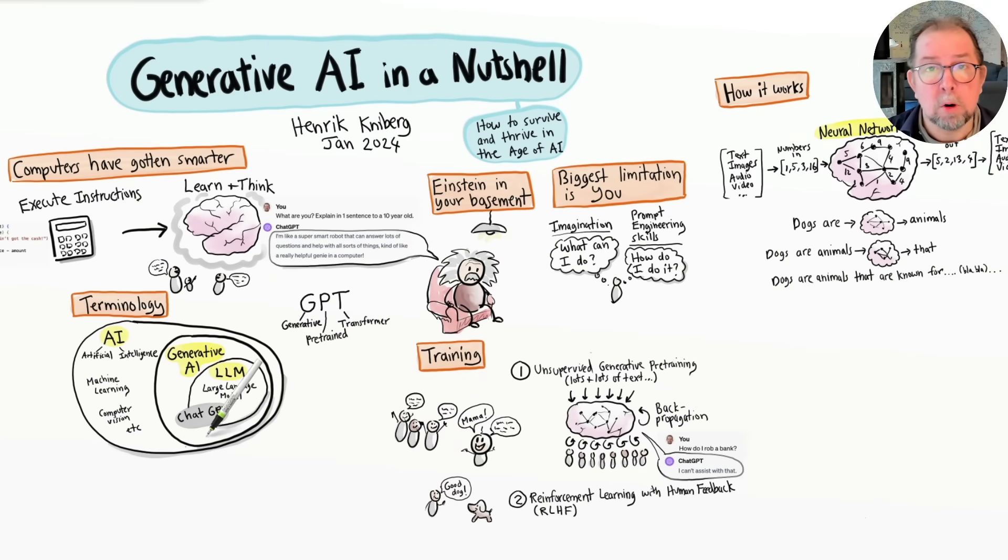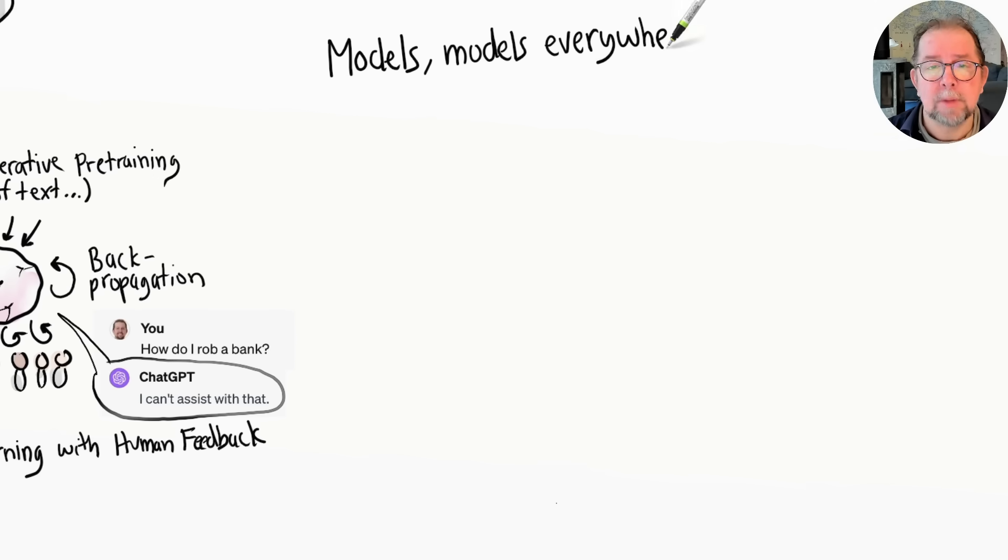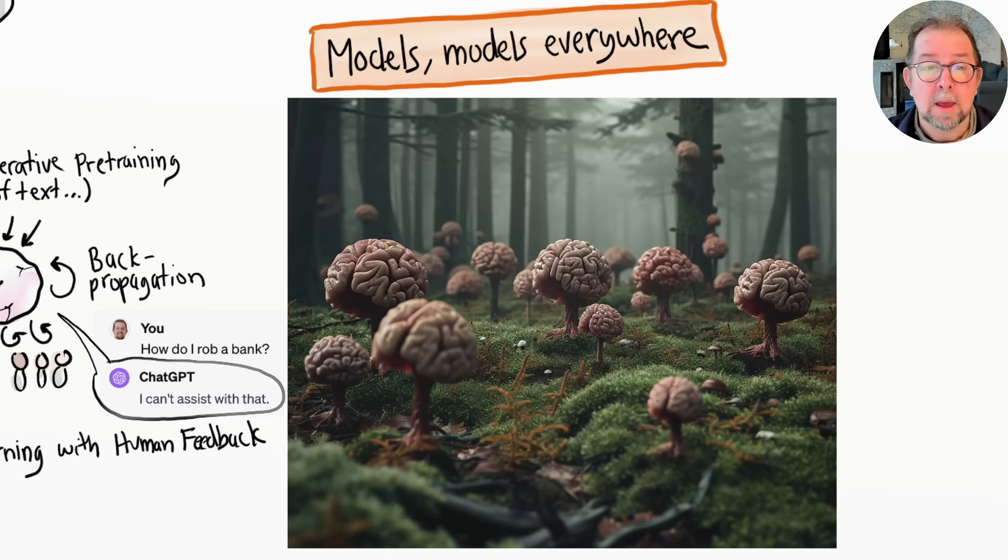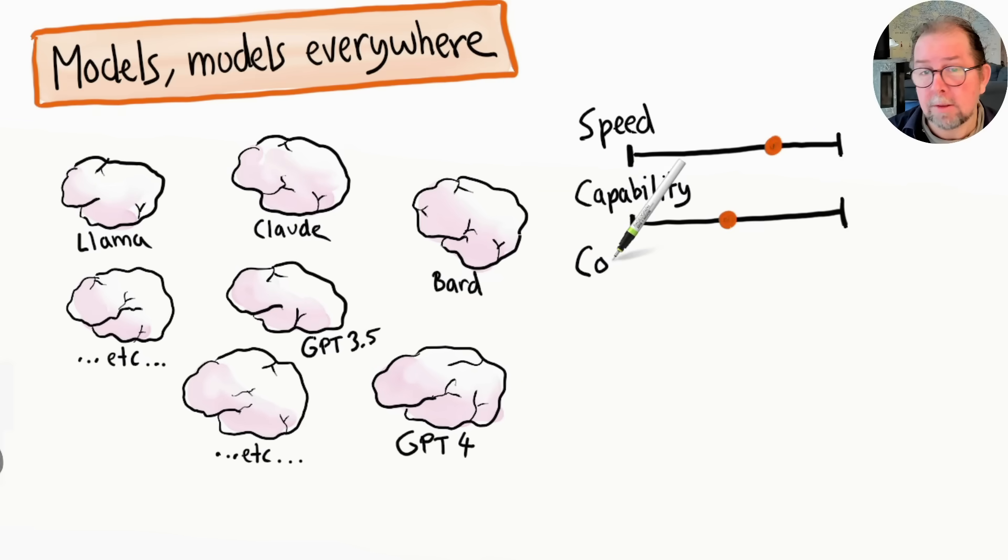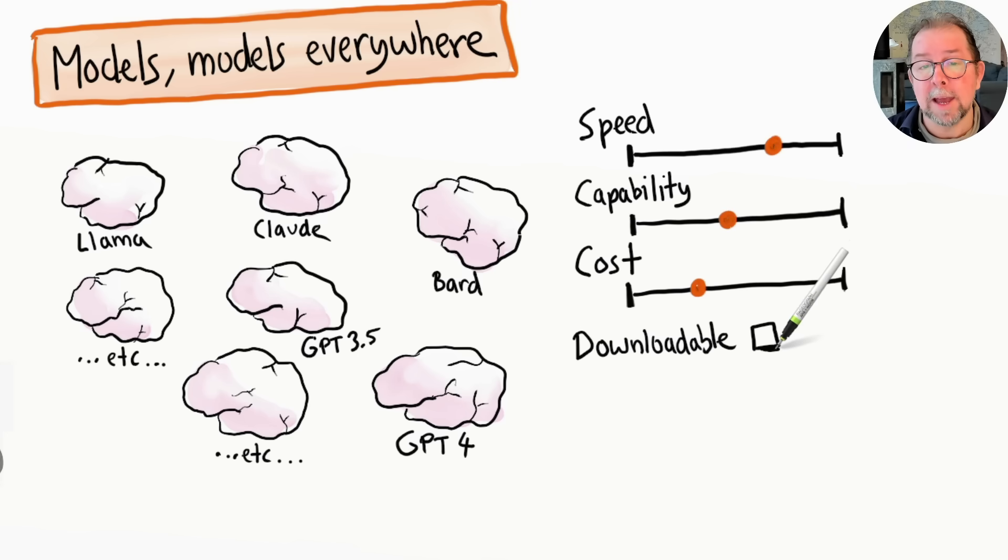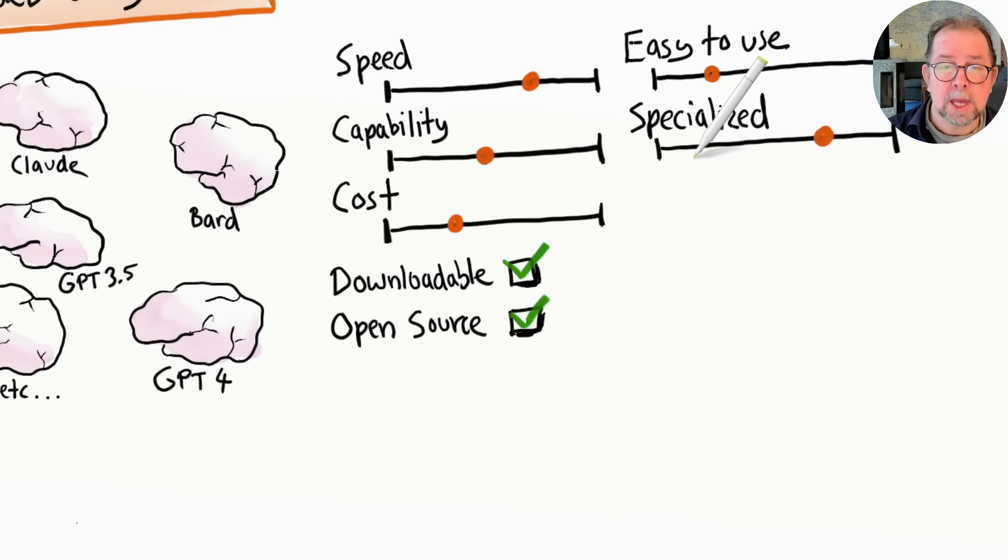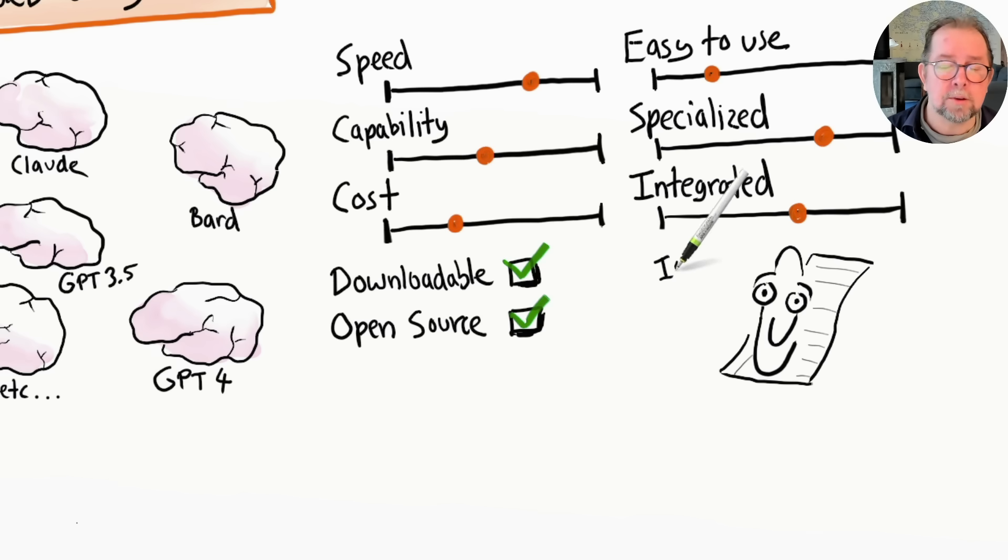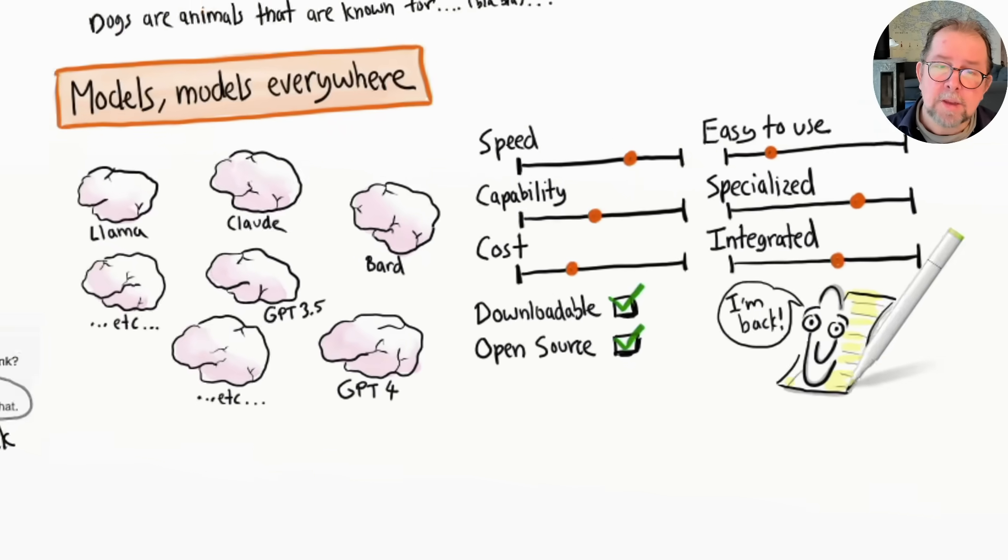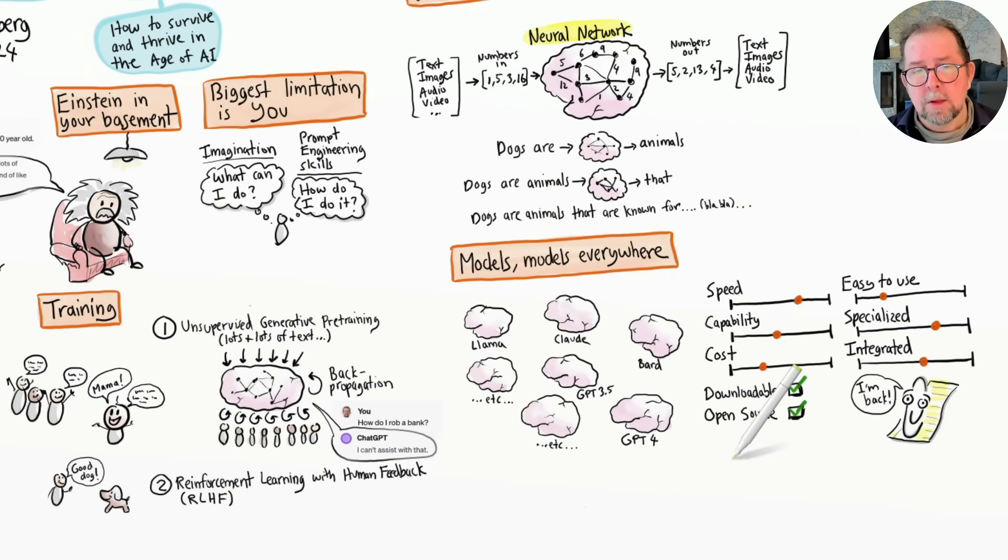Now, although ChatGPT kind of got the ball rolling, GPT isn't the only model out there. In fact, new models are sprouting like mushrooms. They vary a lot in terms of speed, capability, and cost. Some can be downloaded and run locally; others are only online. Some are free or open source; others are commercial products. Some are super easy to use, while others require complicated technical setup. Some are specialized for certain use cases; others are more general and can be used for almost anything. And some are baked into products in the form of co-pilots or chat windows. It's the wild west. Just keep in mind that you generally get what you pay for, so with a free model you may just be getting a smart high school student in your basement rather than Einstein. The difference between, for example, GPT-3.5 and GPT-4 is massive.